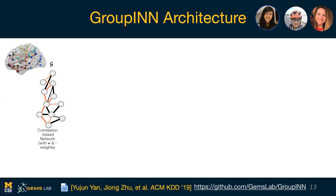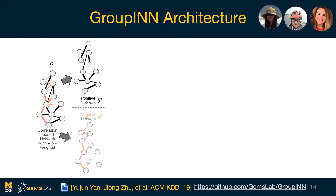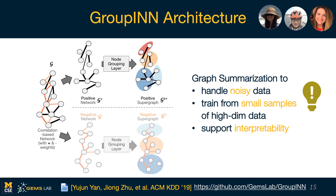What we found useful in this architecture is to actually separate those two representations and have two branches within the neural network. I'll be referring to the positive branch, since the negative one mirrors the positive one. The first layer we have is a node grouping layer, or the summarization layer. The idea is that we are leveraging graph summarization as a way to handle noisy data, to train from small samples of high-dimensional data, and also to support interpretability.